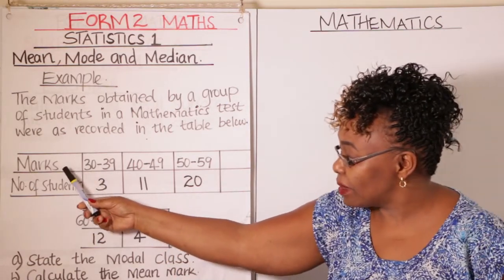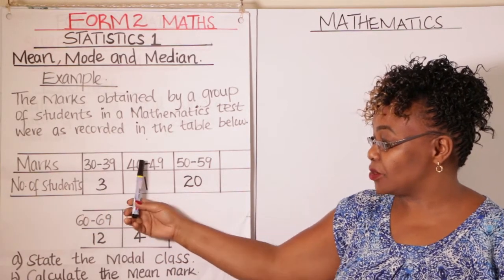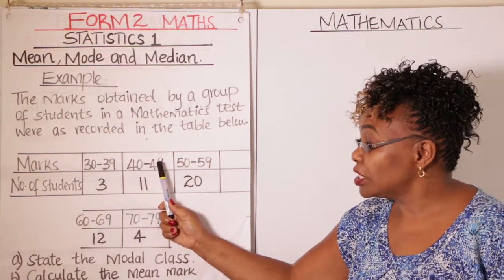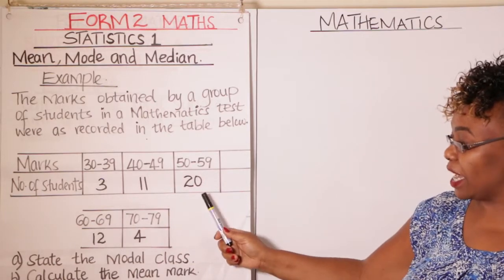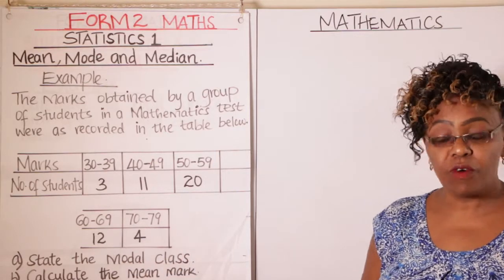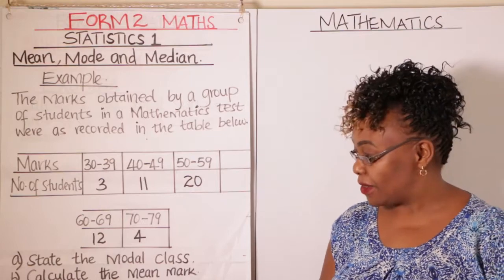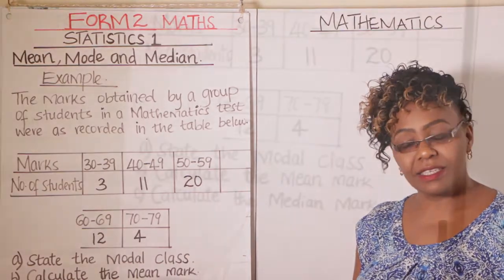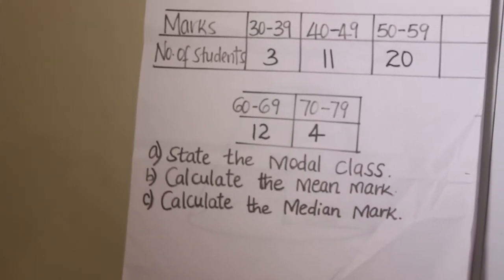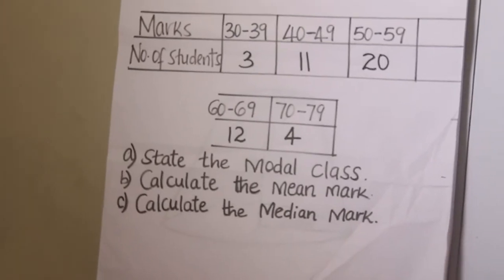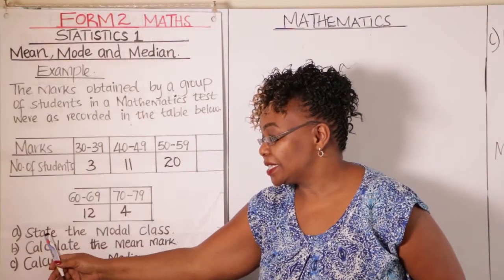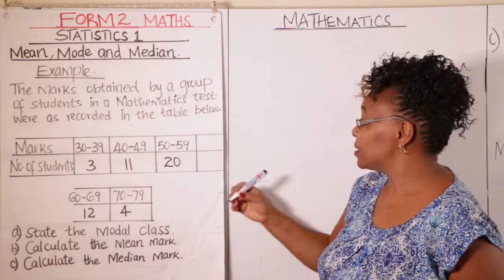The marks are here in groups: 30 to 39 — 3 students; 40 to 49 — 11 students; 50 to 59 — 20 students; 60 to 69 — 12 students; 70 to 79 — 4 students. Our questions are: (a) state the modal class; (b) calculate the mean mark; and (c) calculate the median mark.